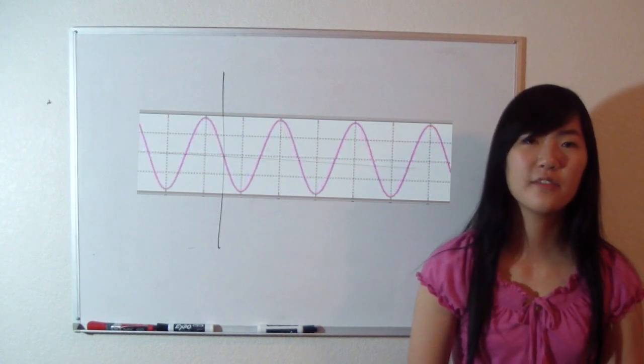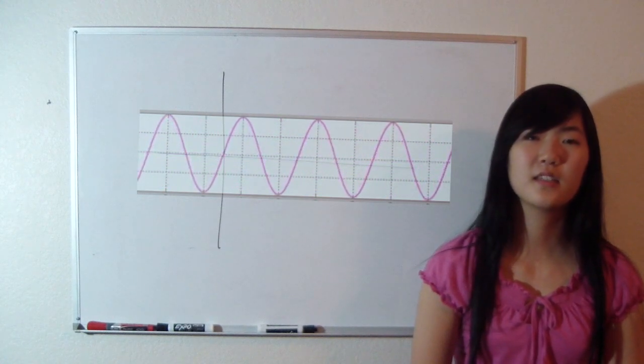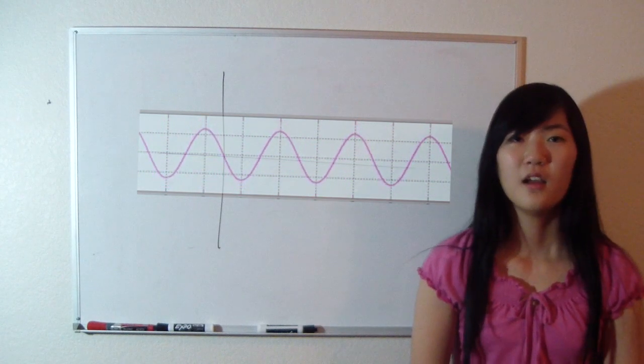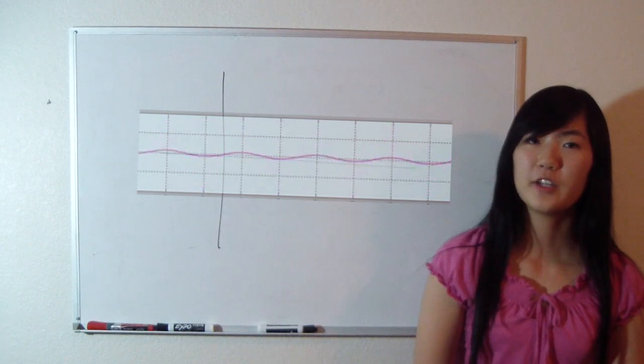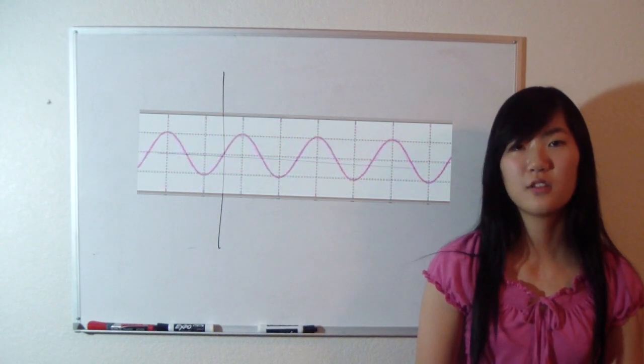Frequency is the number of waves that pass a given point per second, and wavelength is the length of a single wave. A higher frequency results in a higher pitch, and a longer wavelength results in a lower pitch.